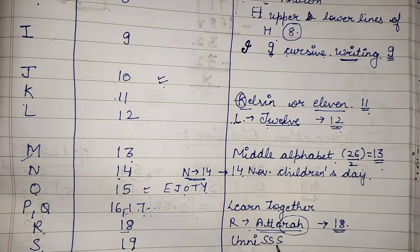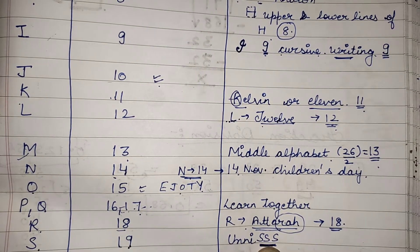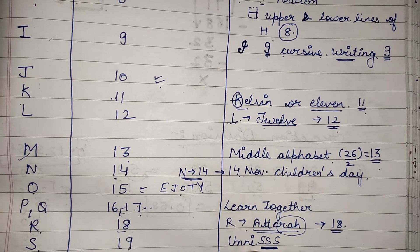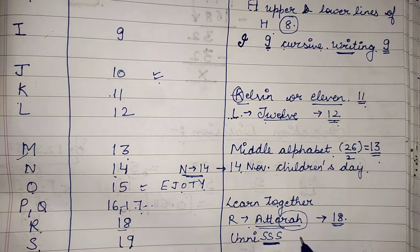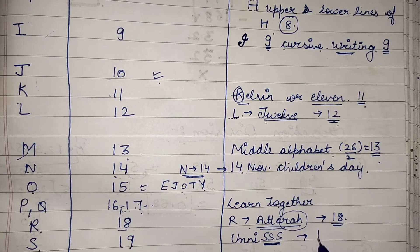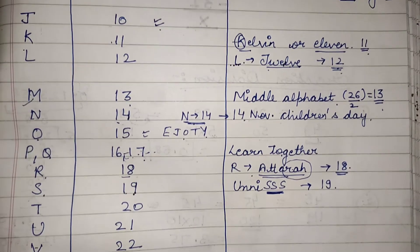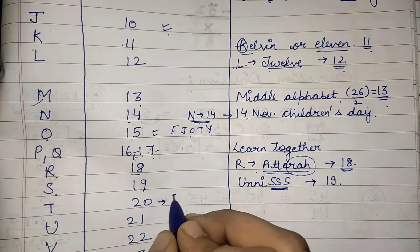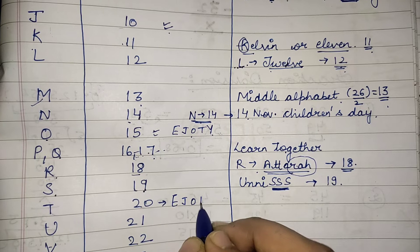S is present at the nineteenth position, which we can remember with the trick 'uni-sis'. We can see that S is coming in 'uni-sis', so the position of S is nineteen.